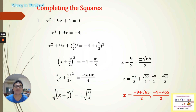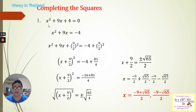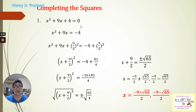Did you understand? Remember that whenever you use completing the square, we need to rearrange first into the standard form. When you say the standard form, the first term would be the quadratic term with power 2, the next would be the first-degree term, then the constant, and equal to 0. Do you have any question? Now we go to the second example.